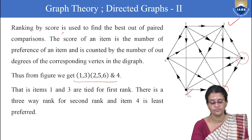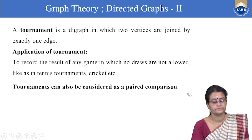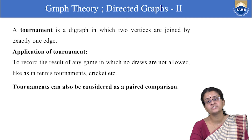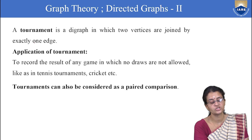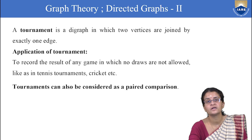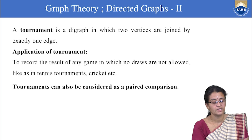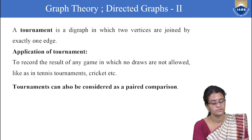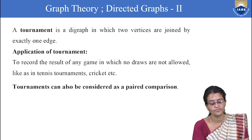This is the method of paired comparison. A tournament is a digraph in which two vertices are joined by exactly one directed edge. It is used to represent games where only one winner is selected, with no draws allowed — like tennis tournaments, cricket, etc. A tournament can also be considered as a case of paired comparison.